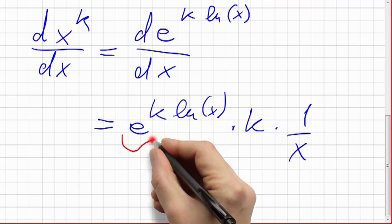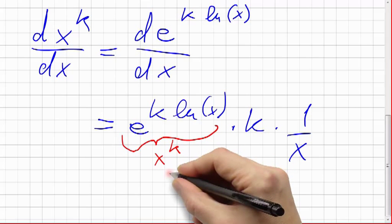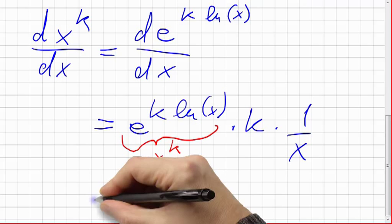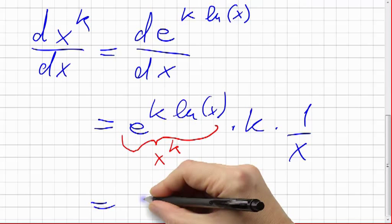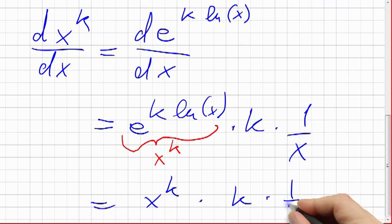So now we have to remember where this came from. This was x to the kth power. So we have x to the kth power times k times 1 over x.